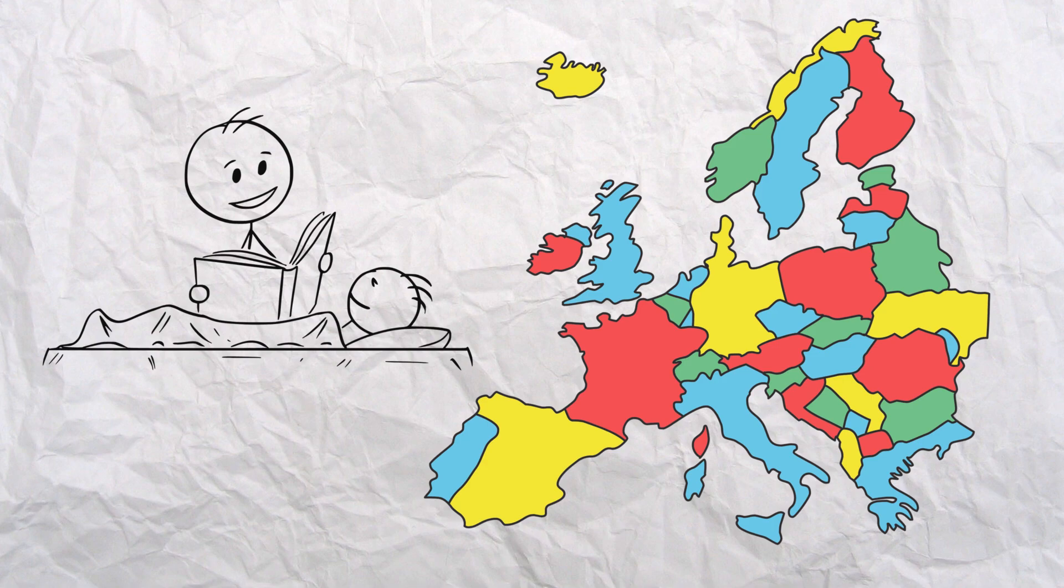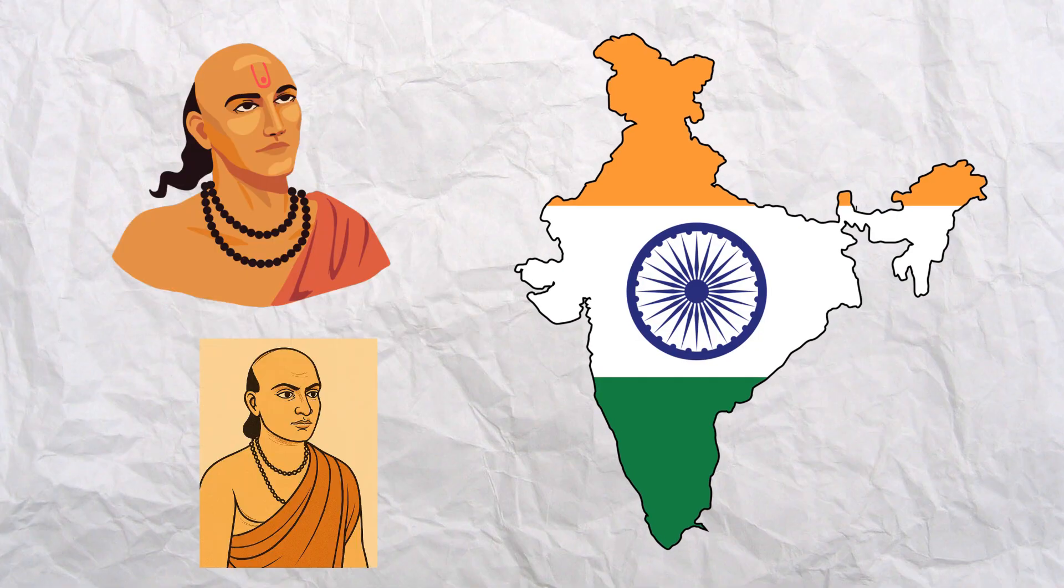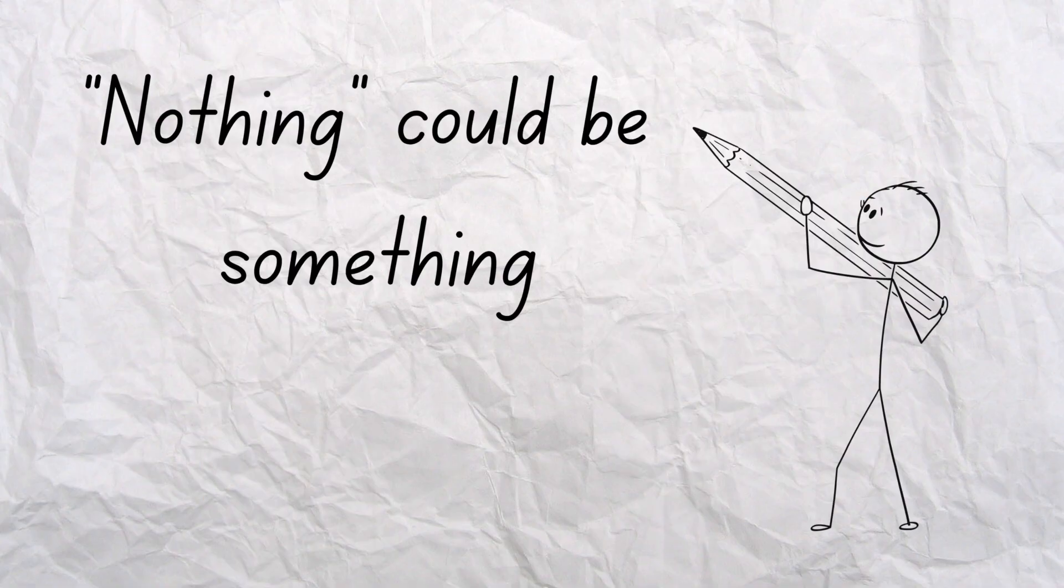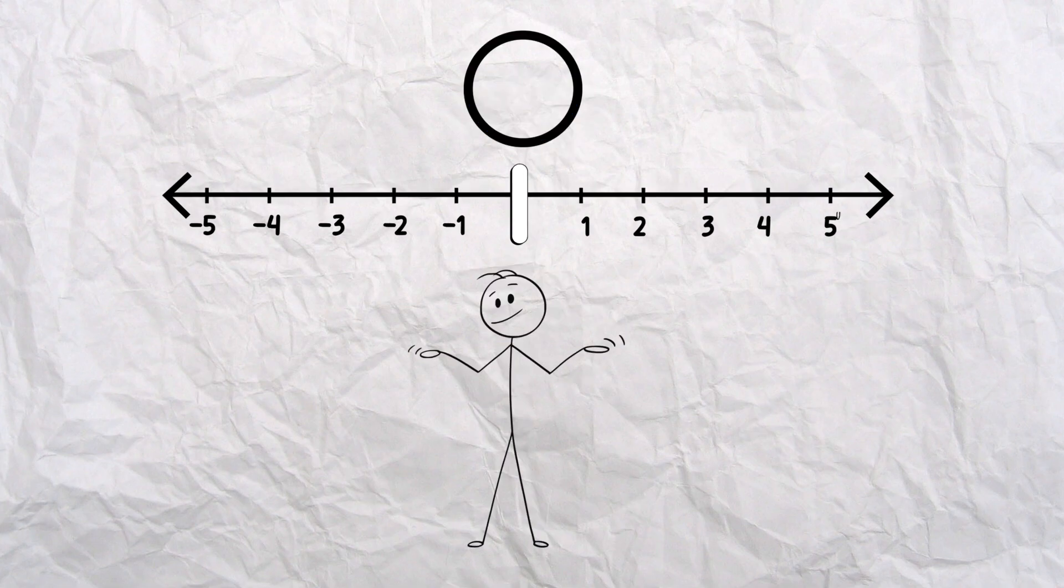The story of zero begins not in Europe, but in India, more than 1,500 years ago. A brilliant thinker named Aryabhata and later Brahmagupta gave the world a radical idea. That nothing could be something. A number that represents emptiness. This was revolutionary. Until then, nothing was just a blank space. A pause between numbers.